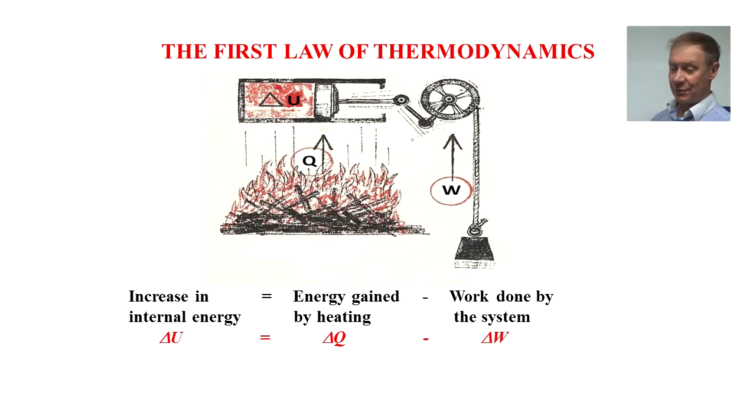The First Law of Thermodynamics states the increase in internal energy, delta U, is equal to the energy gained by heating, delta Q, shown by the fire underneath there, minus the work done by the system, which is the weight being lifted up by the wheel.